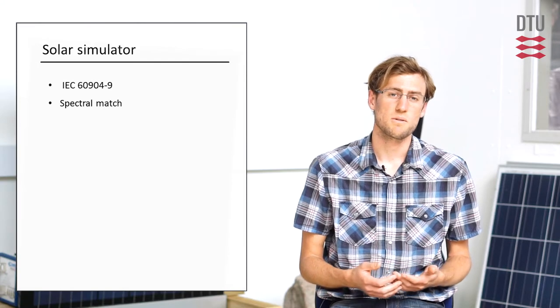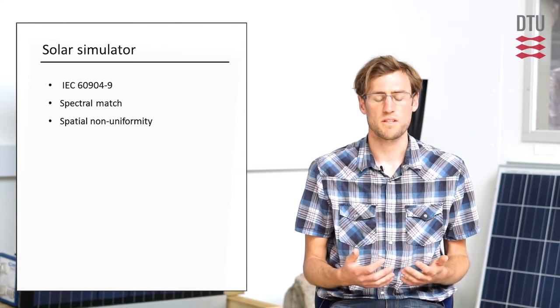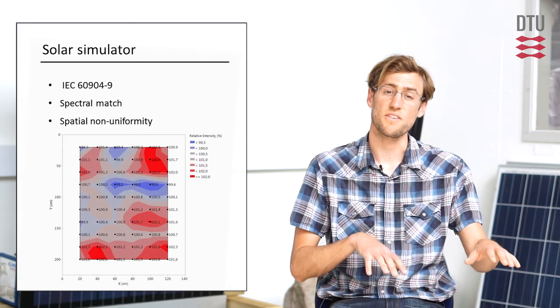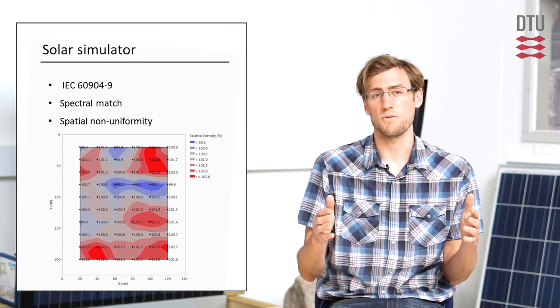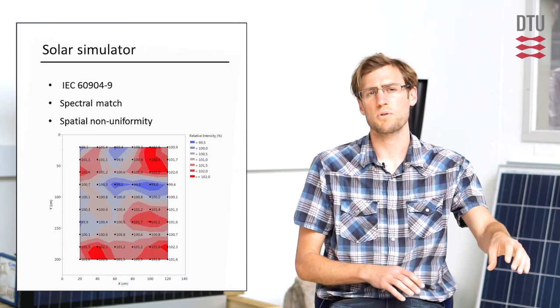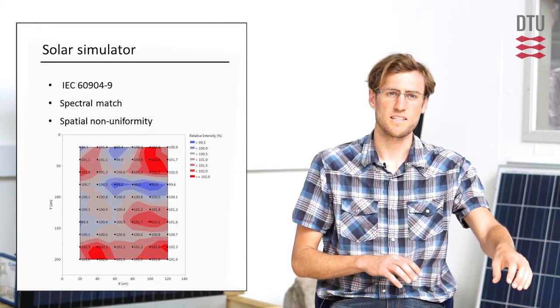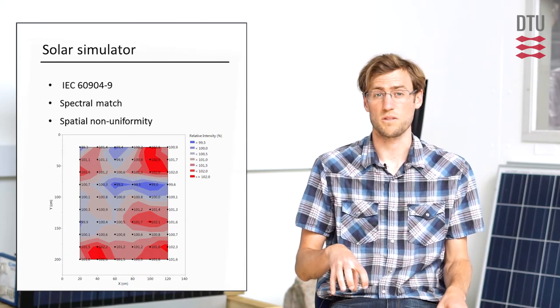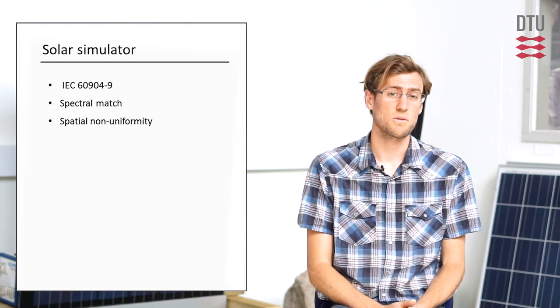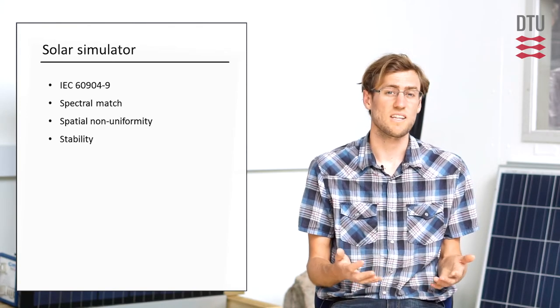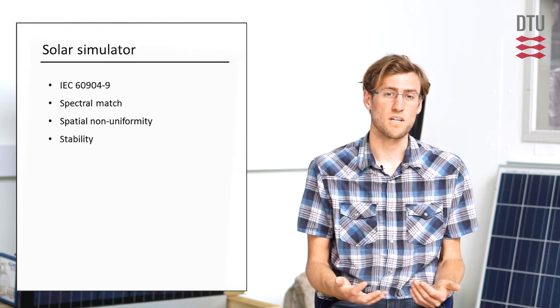The second thing we look at is the spatial non-uniformity, and so what that refers to is how uniform is the intensity on the XY plane. So if you test a module, does the top left-hand corner of that module receive the same light intensity as the bottom right-hand corner? The last thing we look at is the stability of the flash or the light during the IV curve sweep itself.